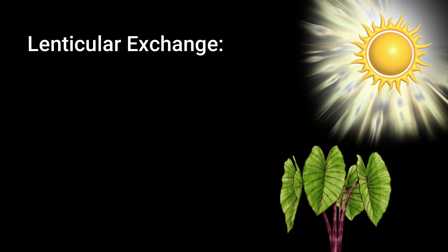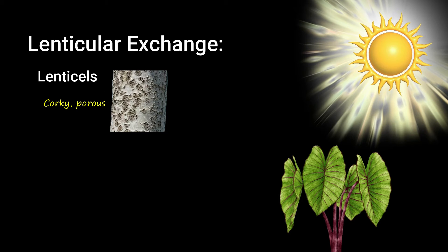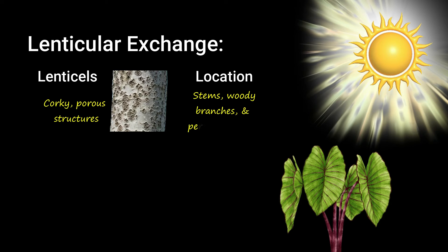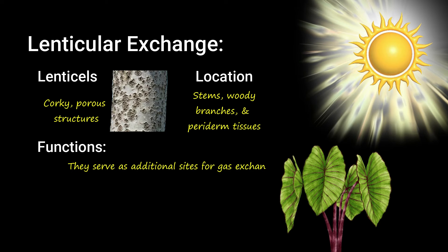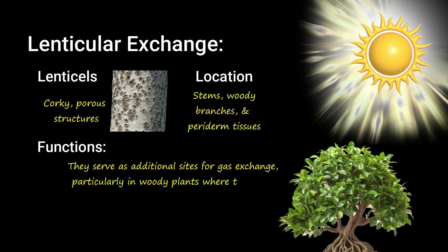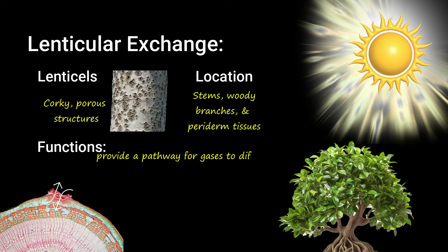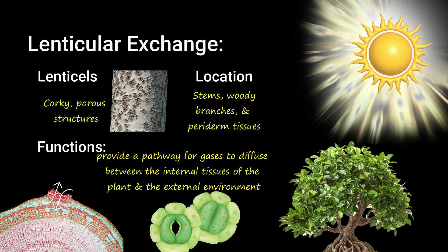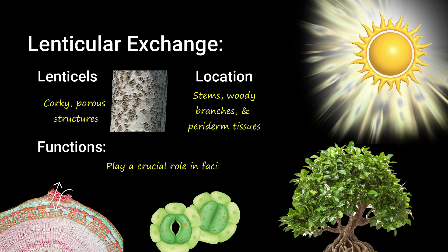Second is lenticular exchange. Lenticels are corky, porous structures found on the surface of stems, woody branches, and other periderm tissues of plants. They serve as additional sites for gas exchange, particularly in woody plants where the outer bark forms a protective layer. Lenticels provide a pathway for gases to diffuse between the internal tissues of the plant and the external environment. While not as numerous or efficient as stomata, lenticels play a crucial role in facilitating gaseous exchange, especially in older or thicker stems where stomata may be absent or reduced in number.